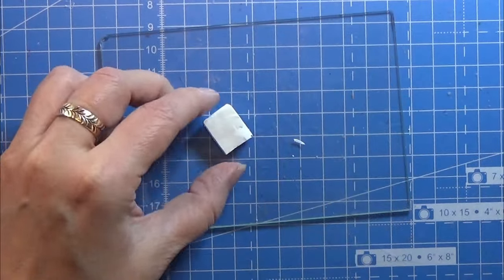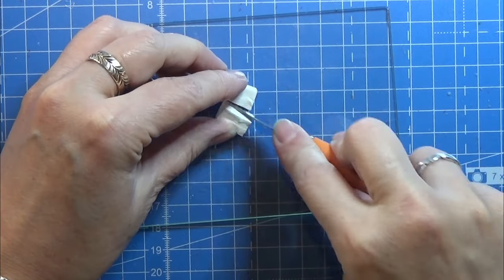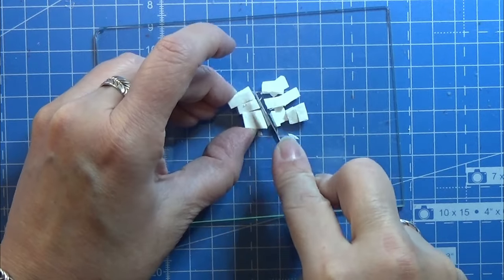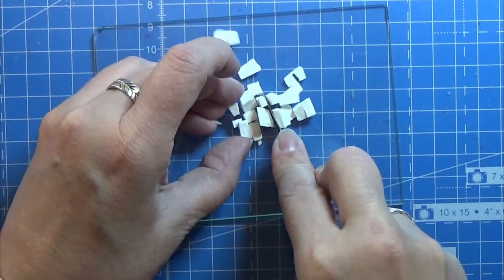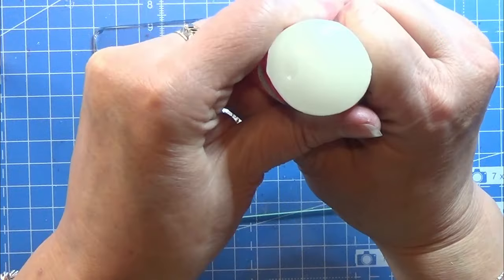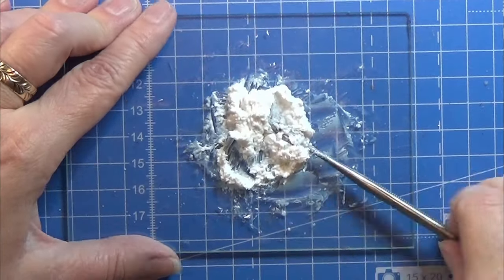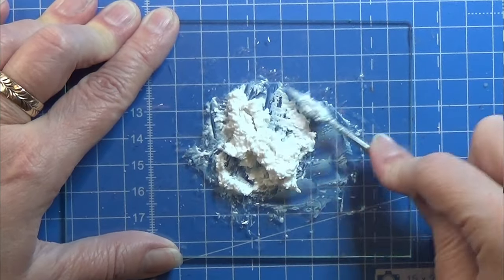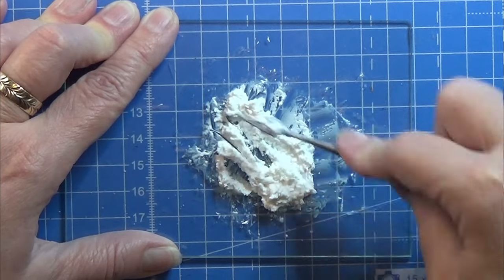So I am going to make some icing and I have been showing you that before and made a whole video of it. So I'm not going into detail here. But I'm chopping up some of my white clay and just putting in some Fimo liquid and mixing that all really good together.